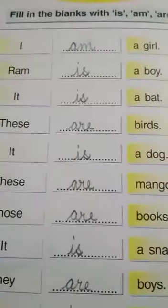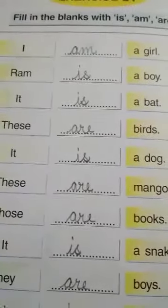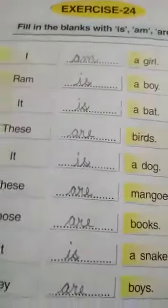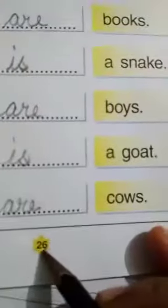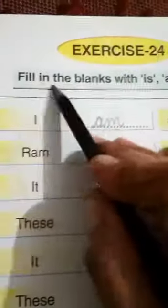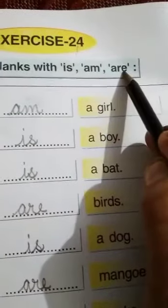Good morning students of standard UKG Rose and Lotus. Open your workbooks of English at page number 26, exercise 24. Fill in the blanks with is, am or are.